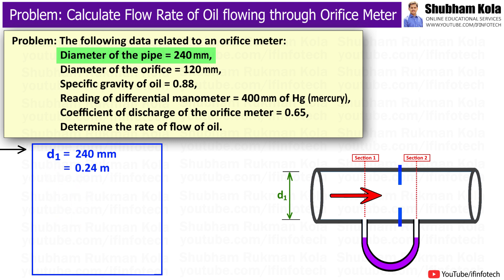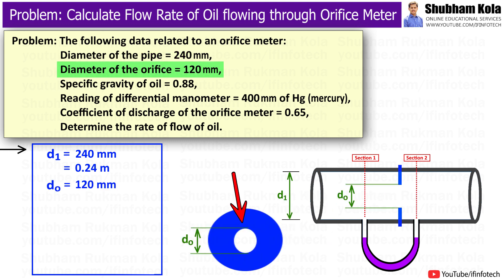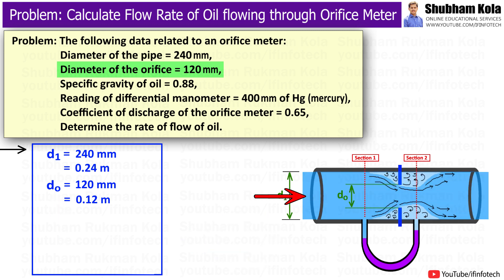In which the orifice plate is being placed, and the diameter value of orifice is given in the problem as 120 mm, i.e. 0.12 m, which is denoted as d0, and the oil is flowing from left to right.